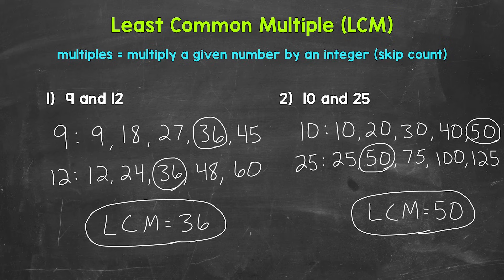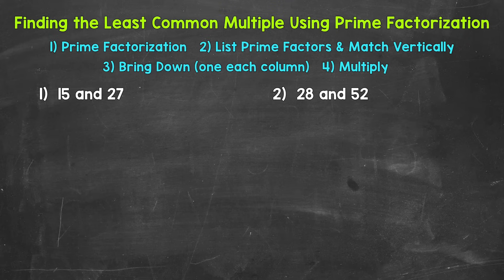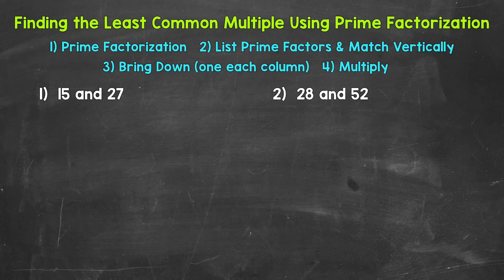So there's how we list out multiples to find the least common multiple. Let's move on to using prime factorization. I like using this strategy and find it helpful when working with numbers that are a little larger in value. The strategy of listing out multiples can be difficult and time consuming with larger numbers, so this is a different approach to be familiar with when finding the least common multiple. Let's jump into example 1, where we have 15 and 27.